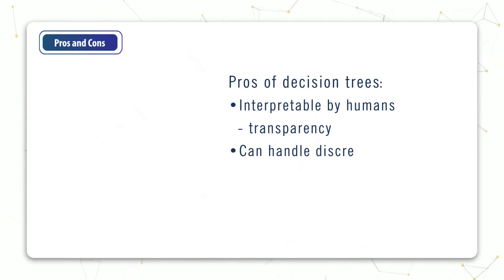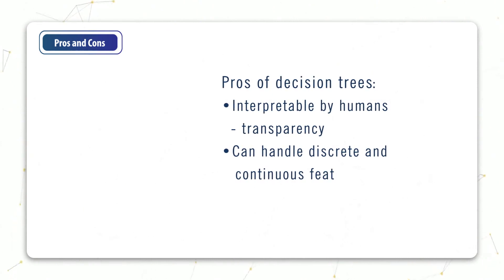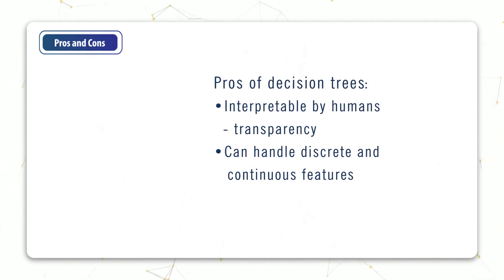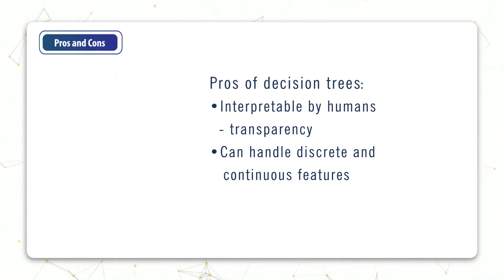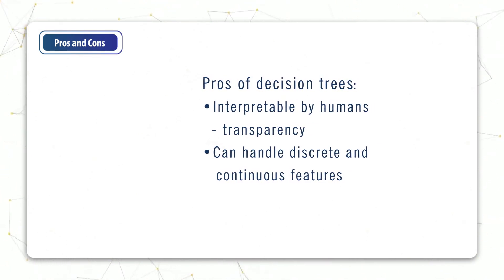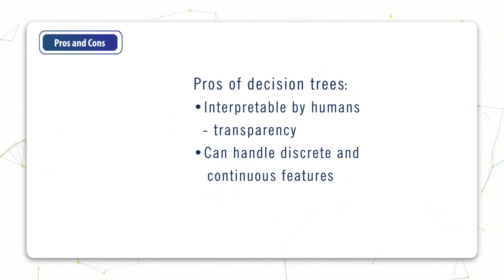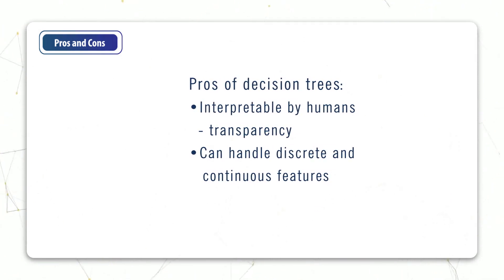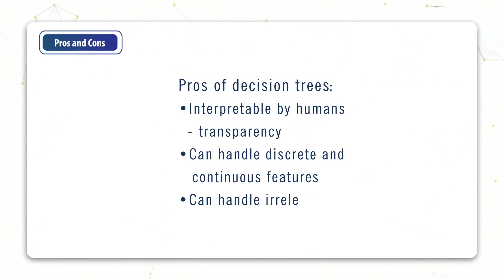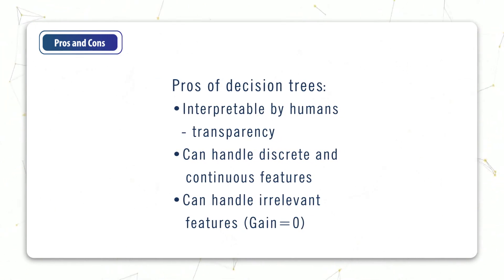But what are the pros and cons of using decision trees over other techniques? Well, decision trees have a reputation for transparency because they're just a bunch of if-then-else statements, and so it's very easy for a user to understand the sequence of decisions that the tree made in order to arrive at its prediction. They can also handle both discrete and continuous features, so sometimes we don't need to do much data preprocessing like one-hot encoding. Another nice thing about trees is that they automatically ignore irrelevant features, because such features produce a gain of zero and so the tree will not split on them.